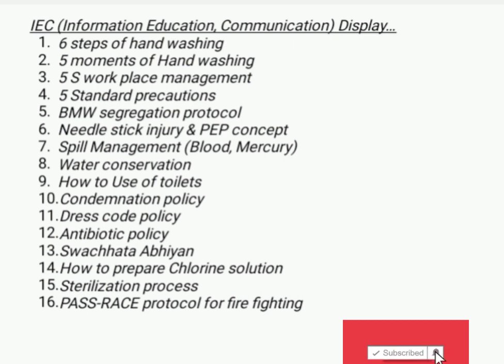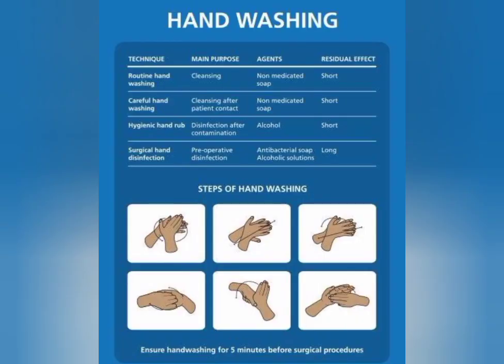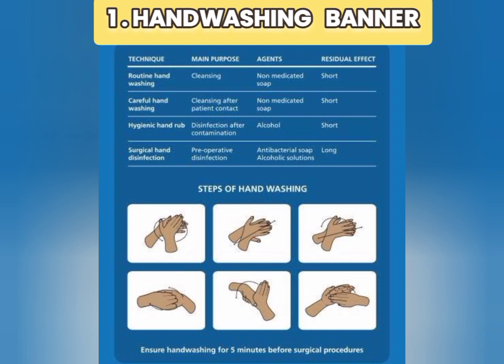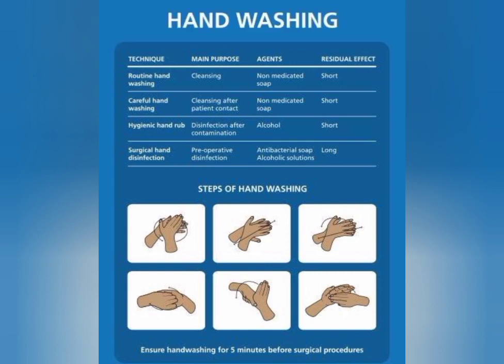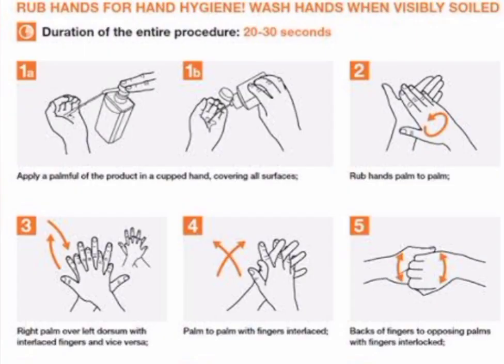Number one: the six steps of hand washing chart. The technique is routine hand washing and the purpose is cleaning. Cleaning agents you can use include alcohol-based swab, non-medicated swab, or antibacterial swab. You should be careful during hand washing. Hygienic hand rub helps remove disinfectant particles as well as contamination. Surgical hand disinfection is a pre-operative disinfection procedure using antibacterial swab or alcoholic solutions, giving long-term effect.